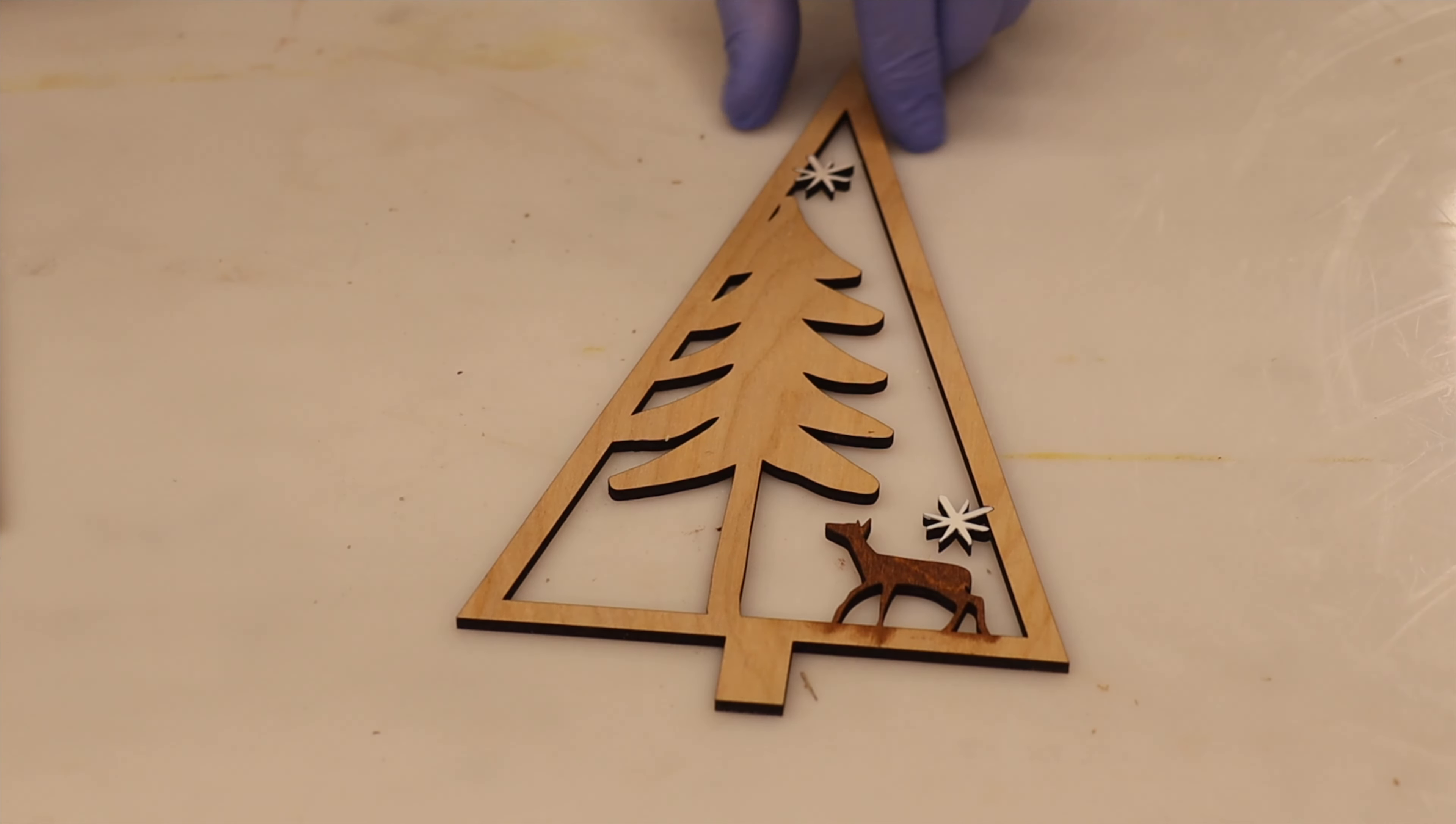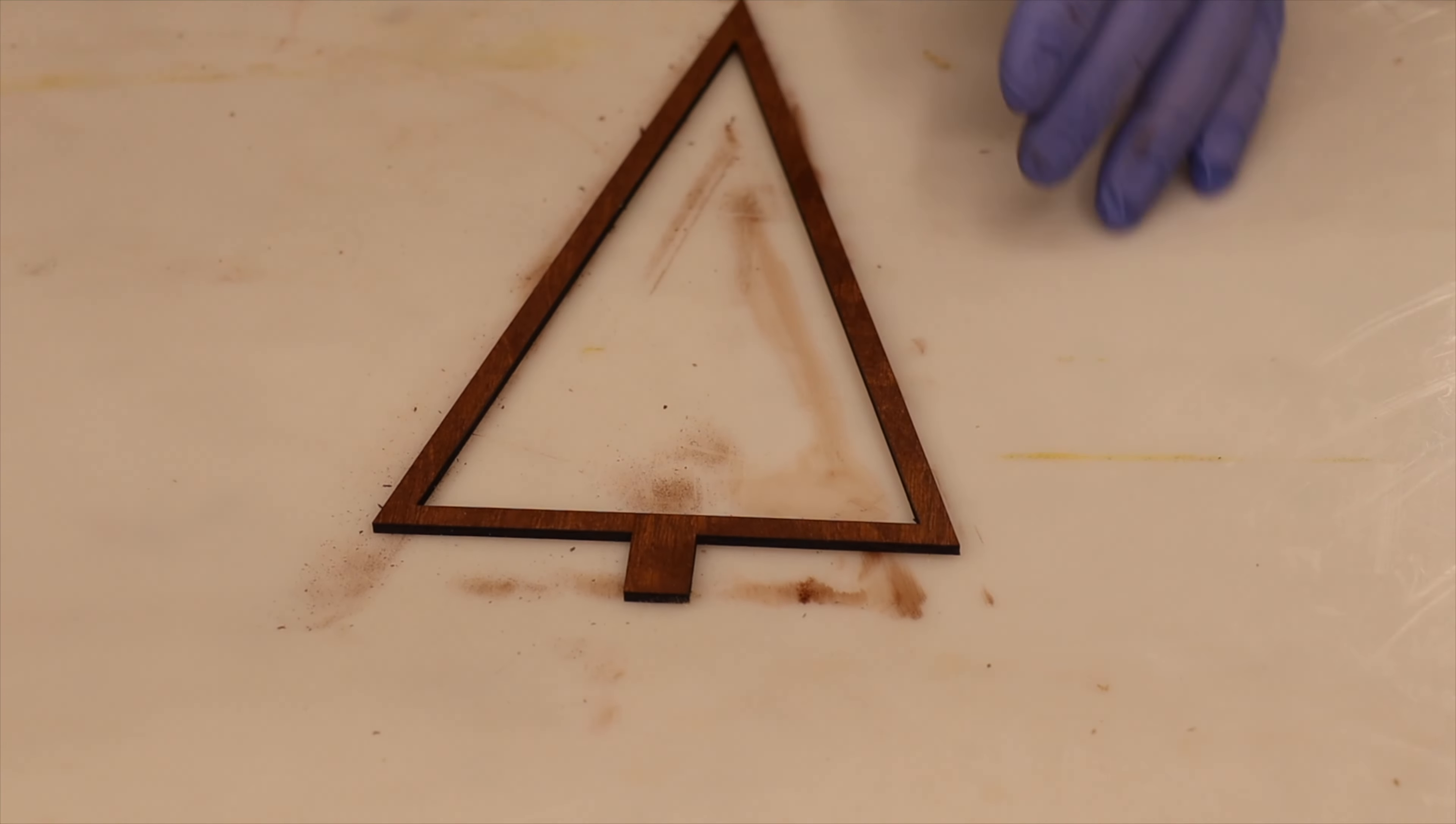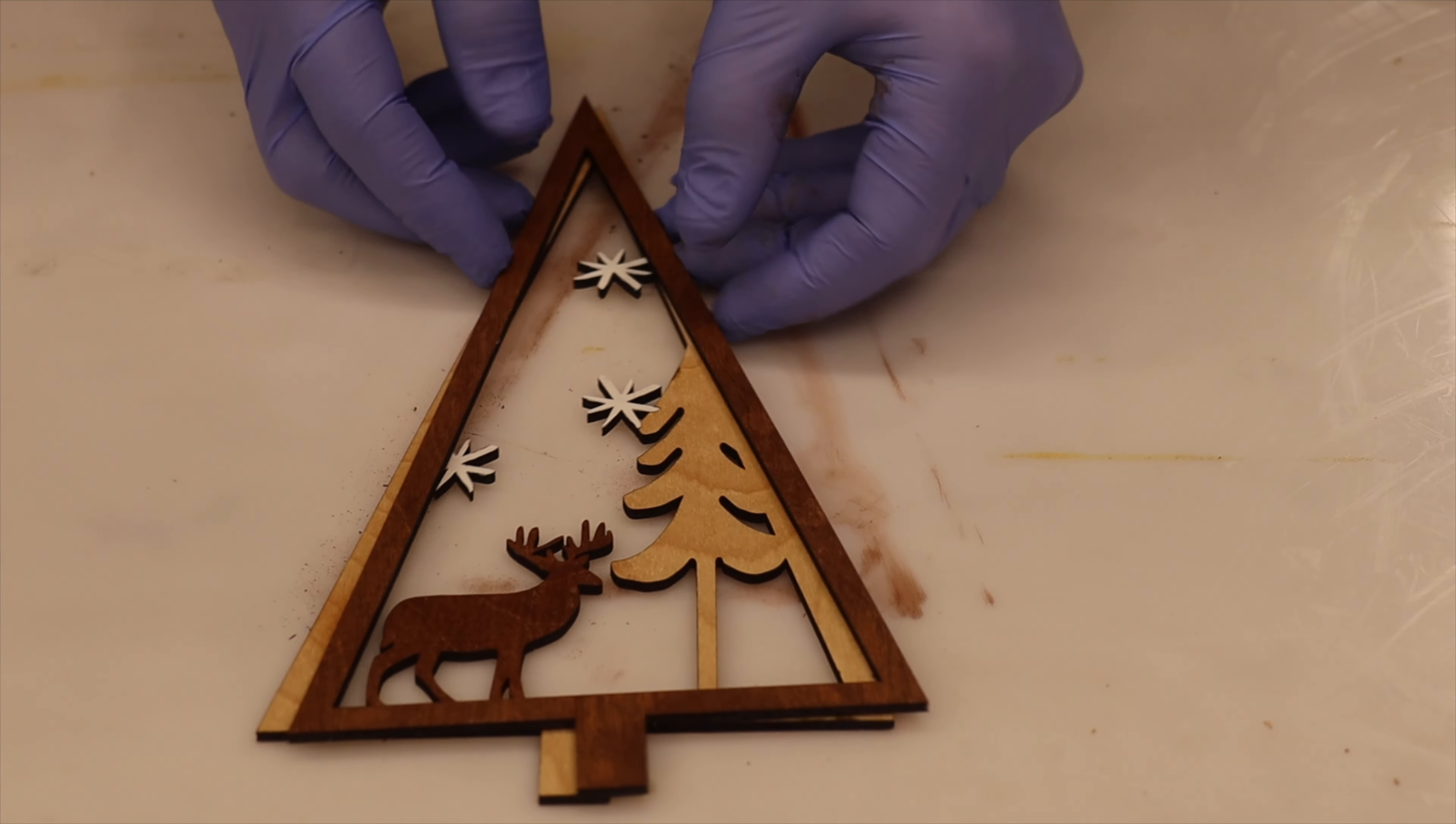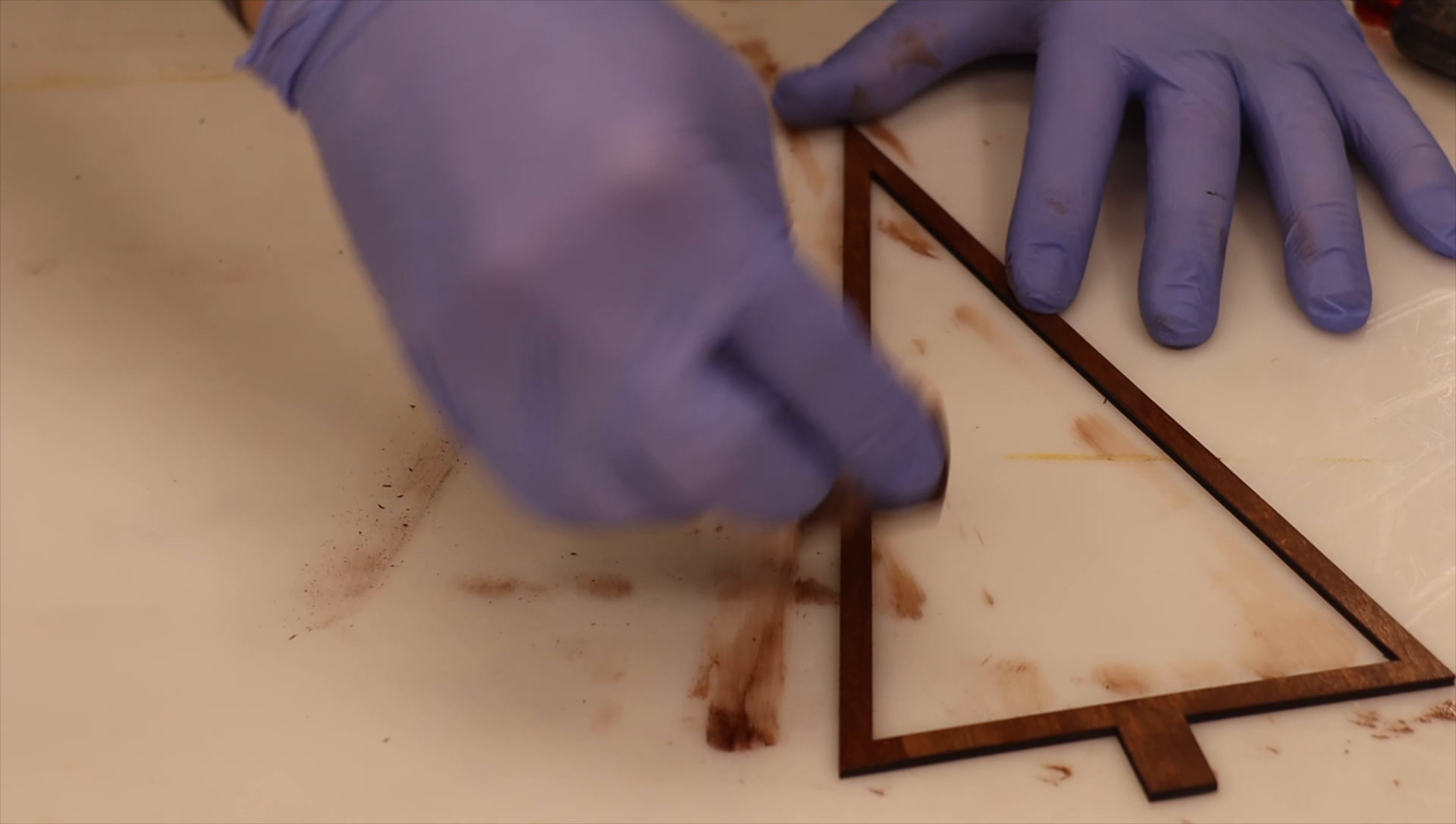Okay, that's the two deer. Set that aside, let it dry. And hopefully there's enough contrast between the two. I think there is. Maybe I'll put another coat on this one just to make sure it pops and it's a different color. Again, you can do whatever you want. Maybe don't use stain. Maybe you use just paint or whatever.